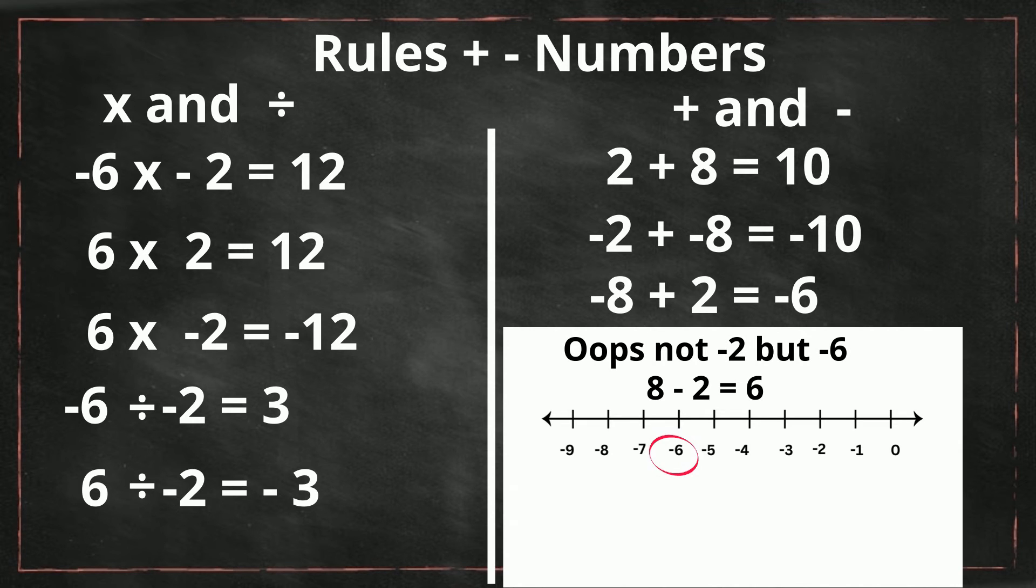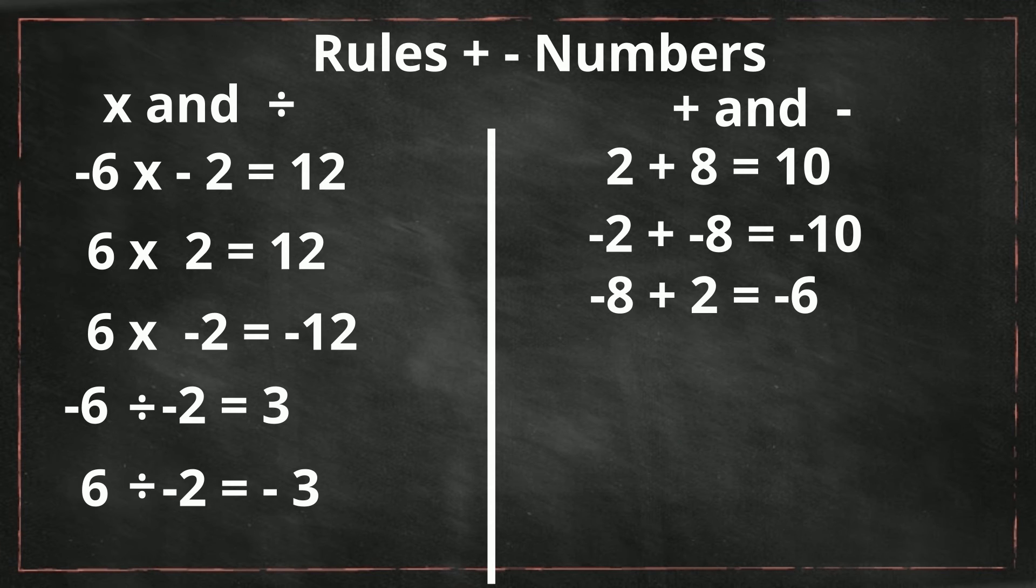Now, with subtraction, you basically follow the same rules, but you're just going to convert it to an addition problem. So you have negative 8 minus 2. You're going to convert the subtraction to an addition, but we need to do something with that negative sign. So we're going to place it with the 2. So now you have negative 8 plus a negative 2. The signs are the same. So we're going to keep the sign. It becomes negative 10.